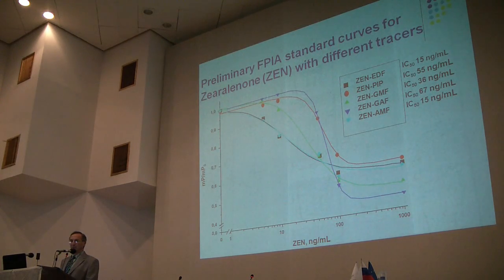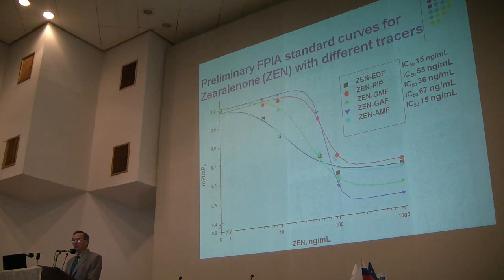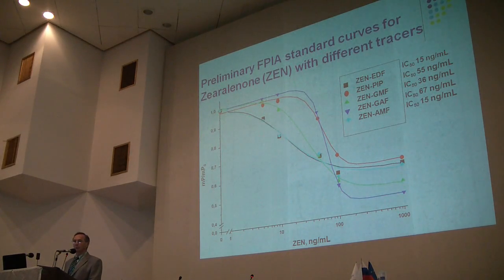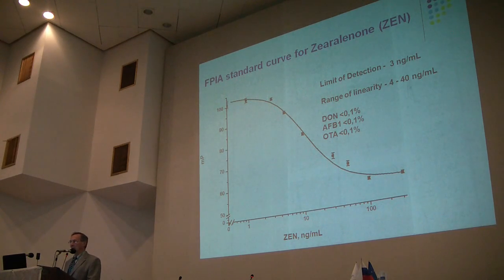Under optimized conditions, we developed a fluorescence polarization assay for zearalenone. It is quite important when developing any immunoassay to consider what kind of immune reagent — what kind of antibody and what kind of tracer — to use. Here we used the same antibody with five different tracers to detect zearalenone, and identified the most optimal tracer which provided the most sensitive analysis. After optimization, this is the analytical performance for the standard curve, with a detection limit for zearalenone of around 3,000 picograms per milliliter, and no cross-reactivity with other mycotoxins.